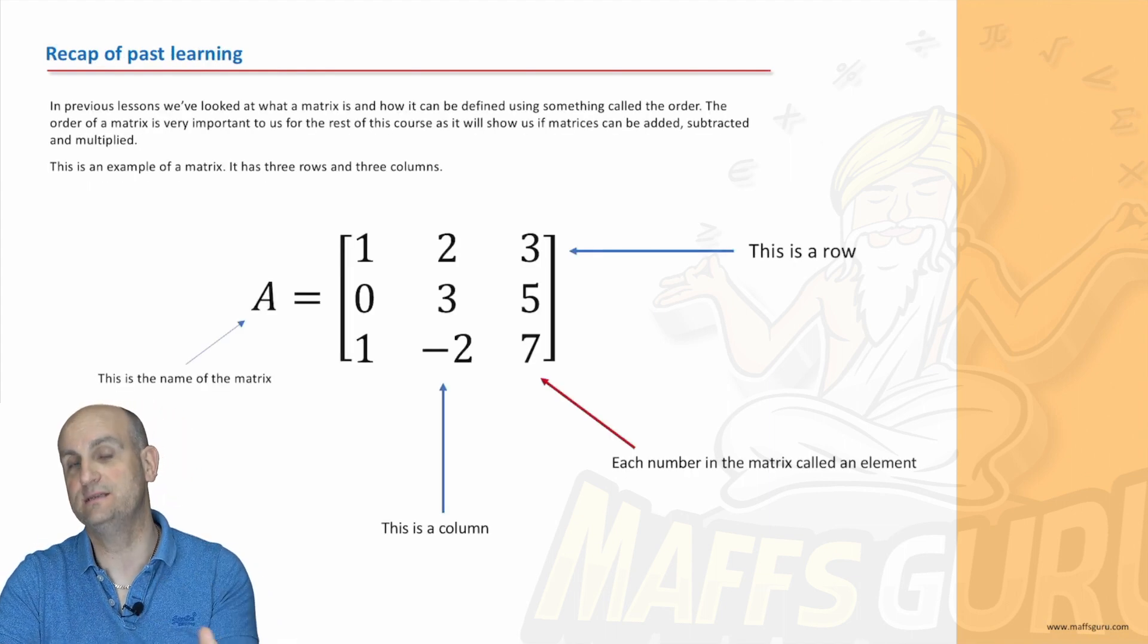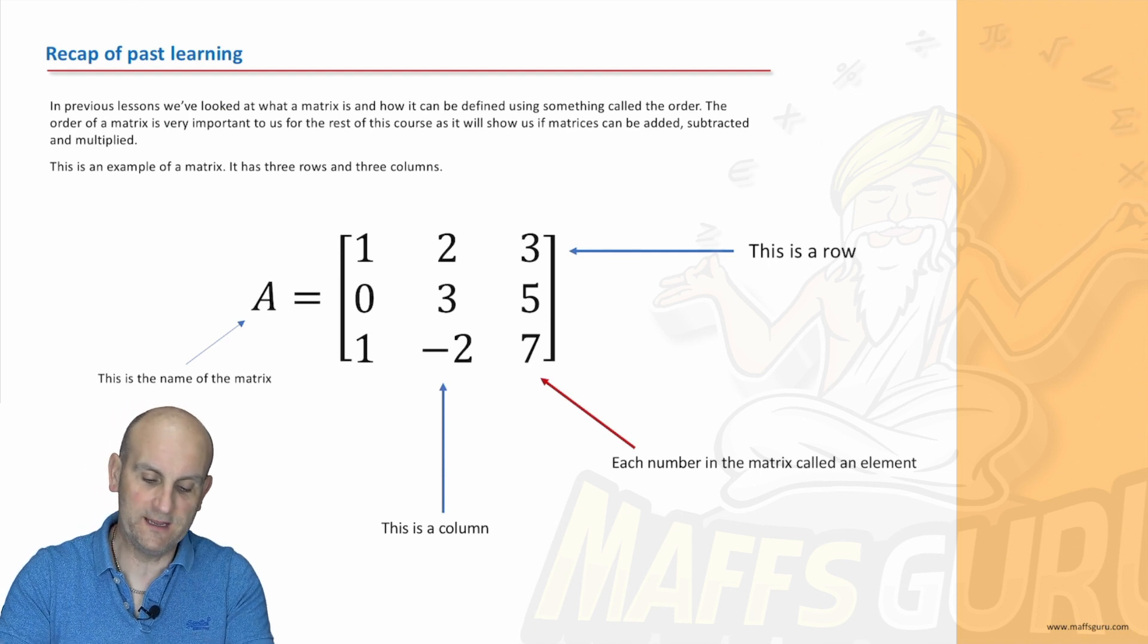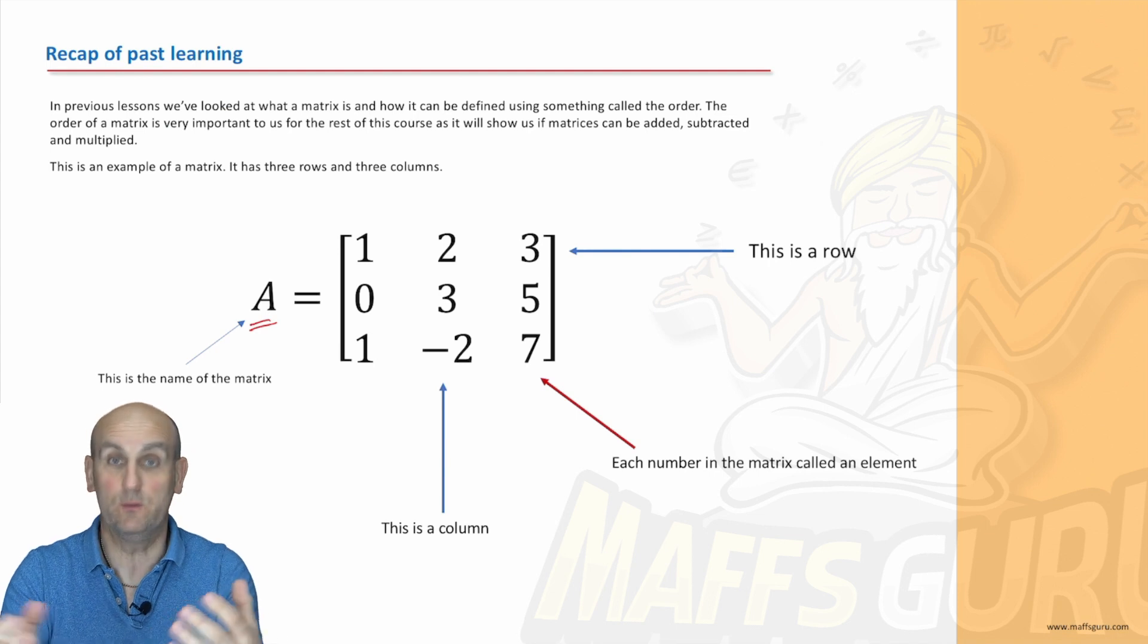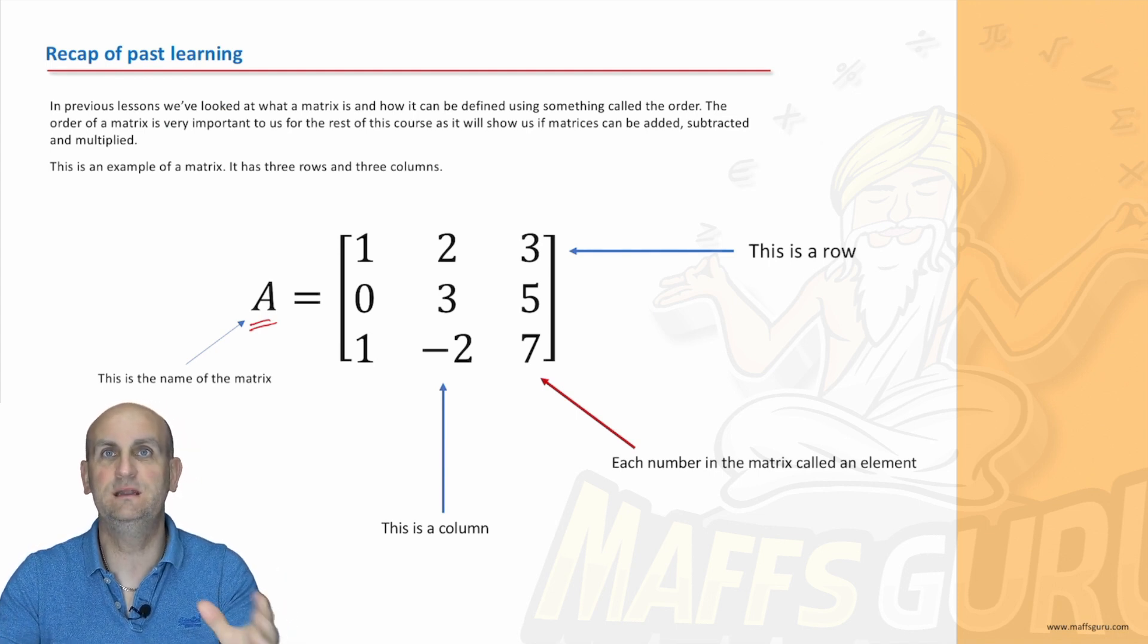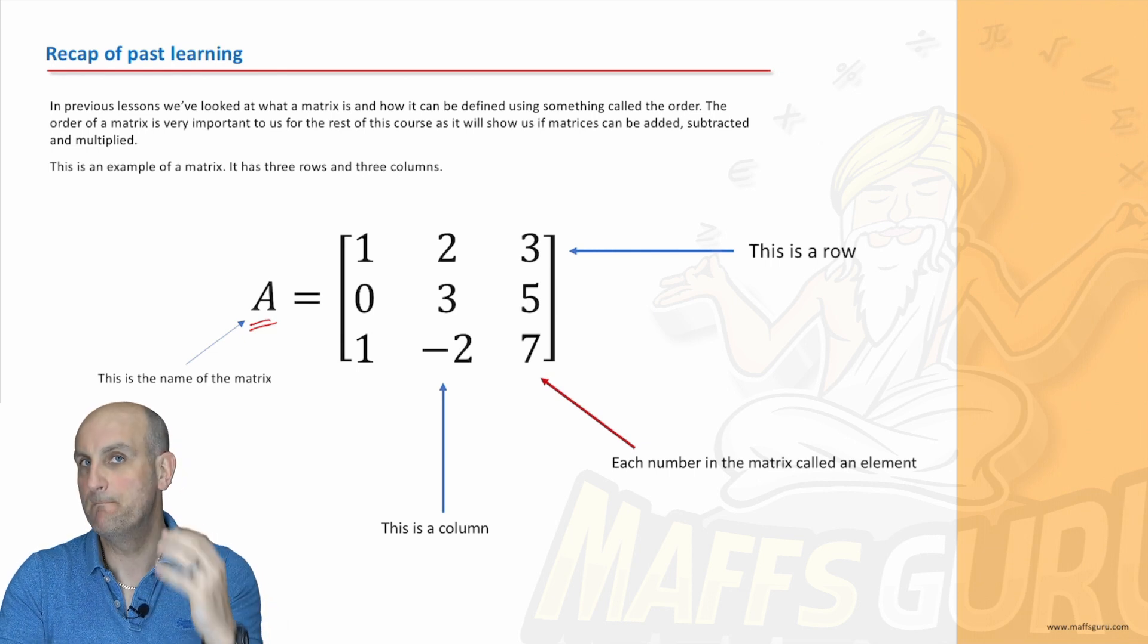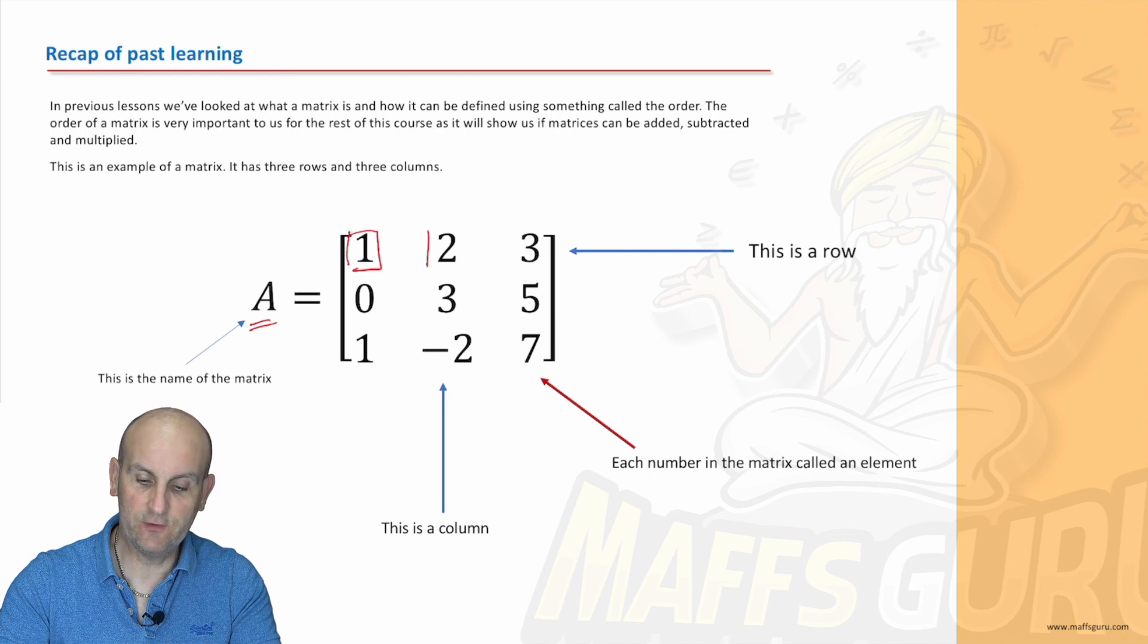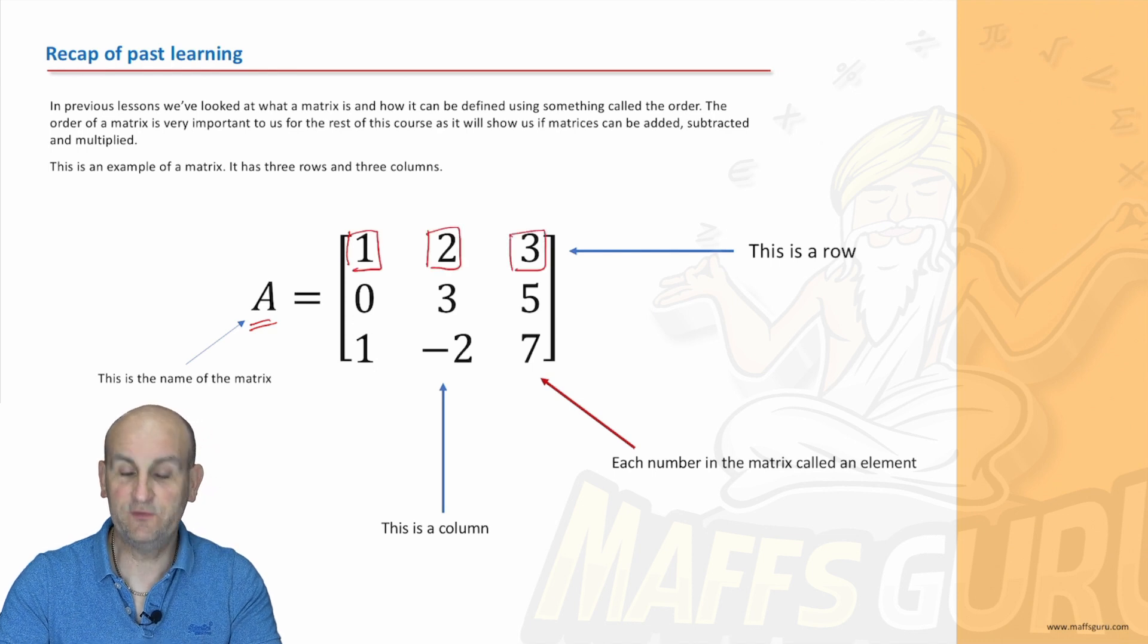In our previous lesson we looked at what a matrix was, and we've decided a matrix has a name - it can be A, B, C, call it whatever you like really. It has numbers in it, it's defined by rows and columns, it has orders, but more importantly it has these things called elements.